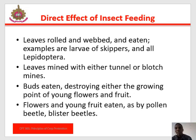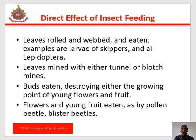The direct effects of insect feeding on crops include: leaves rolled, webbed, and eaten; leaves mined with either tawny or blotch mines; destruction of growing points, young flowers, and fruit; flowers and young fruit eaten by insects such as pollen beetles; blisters on the crop. Fruit and seed may be eaten or bored and destroyed, as done by sorghum midge larvae, pea pod borer, millet weevil, coffee berry borer, and various fruit flies. Fruit may also be bored and caused to fall prematurely, for example by mango fruit fly and coffee fruit flies.